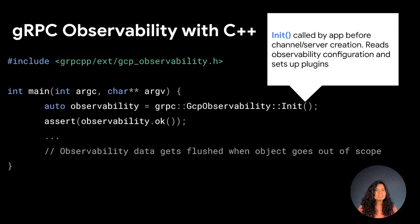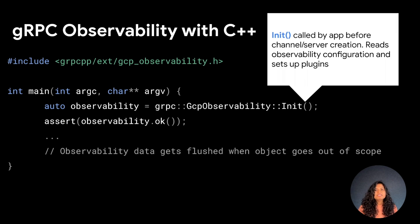C++ follows a similar flow to Java and Go for setting up observability. In your application main method, gcpobservability init should be called before any gRPC channels or servers are created. Observability will be set up based on the configuration provided. You can see how easy it is to instrument applications with observability in Java, Go, and C++. With just a few lines of code, you turn on the magic of gRPC observability.